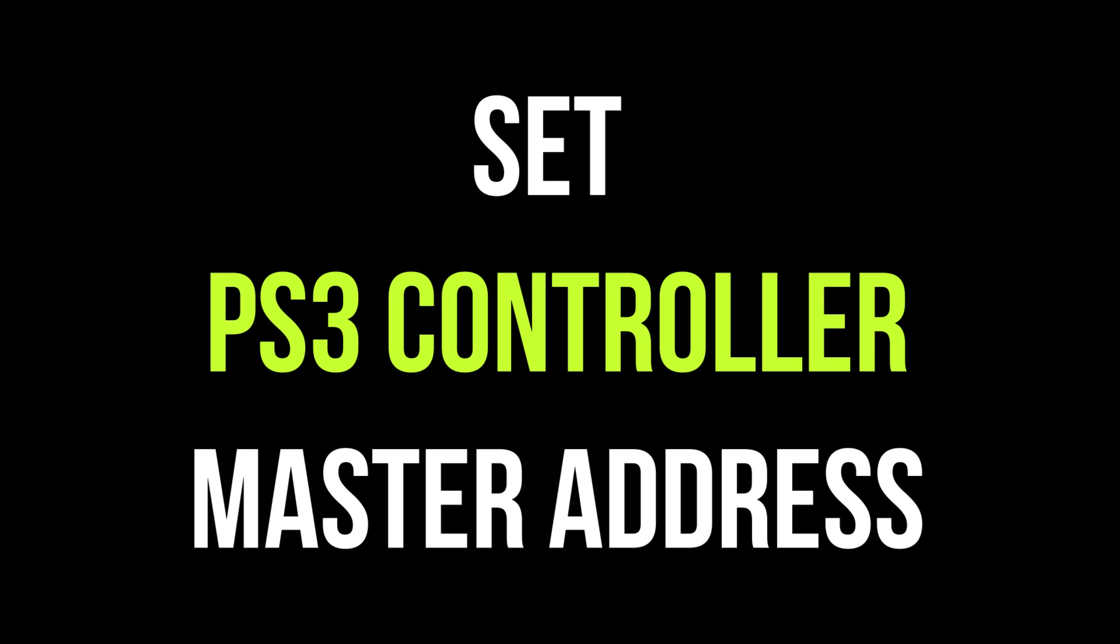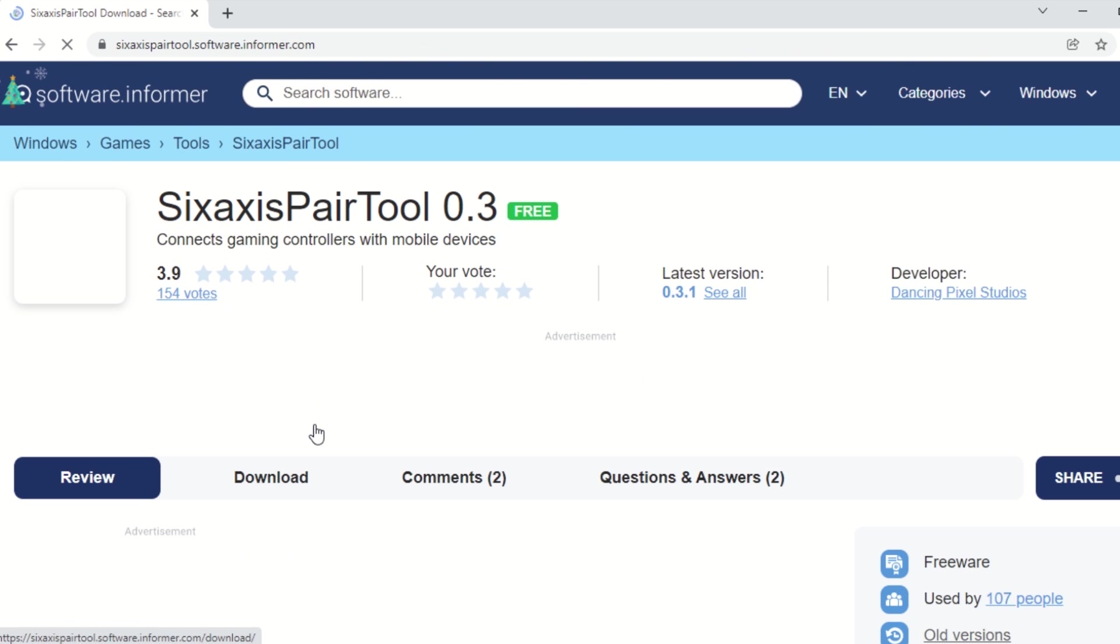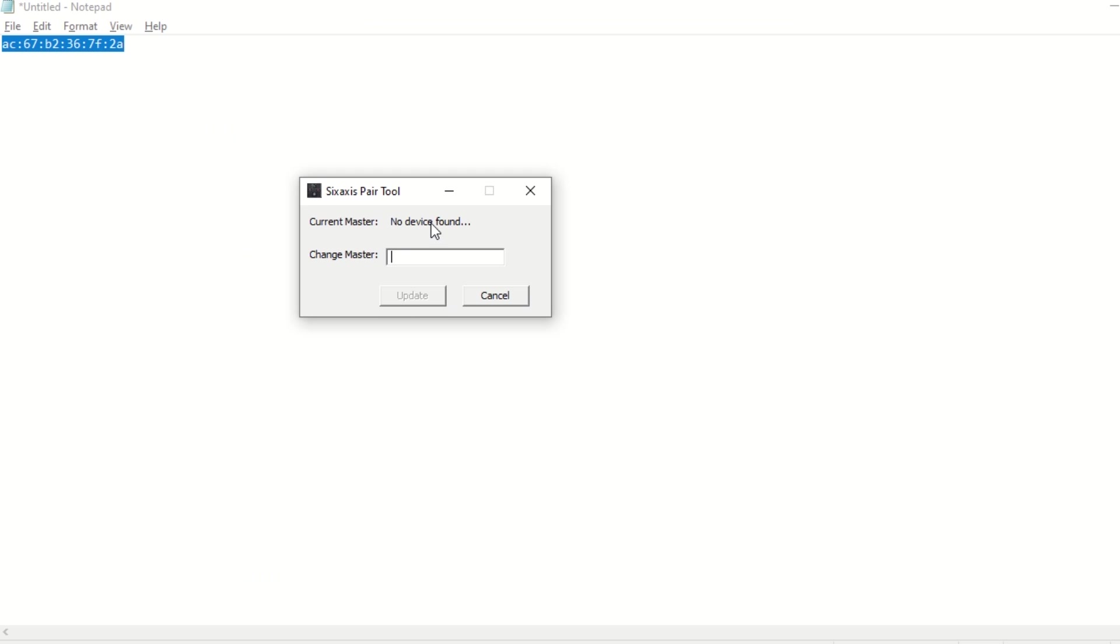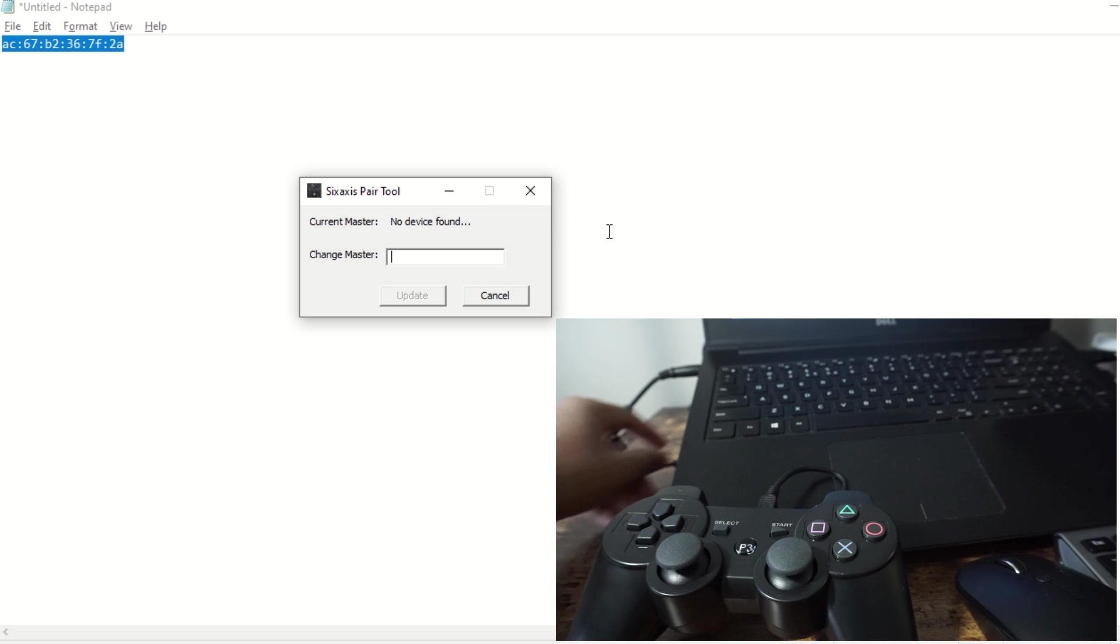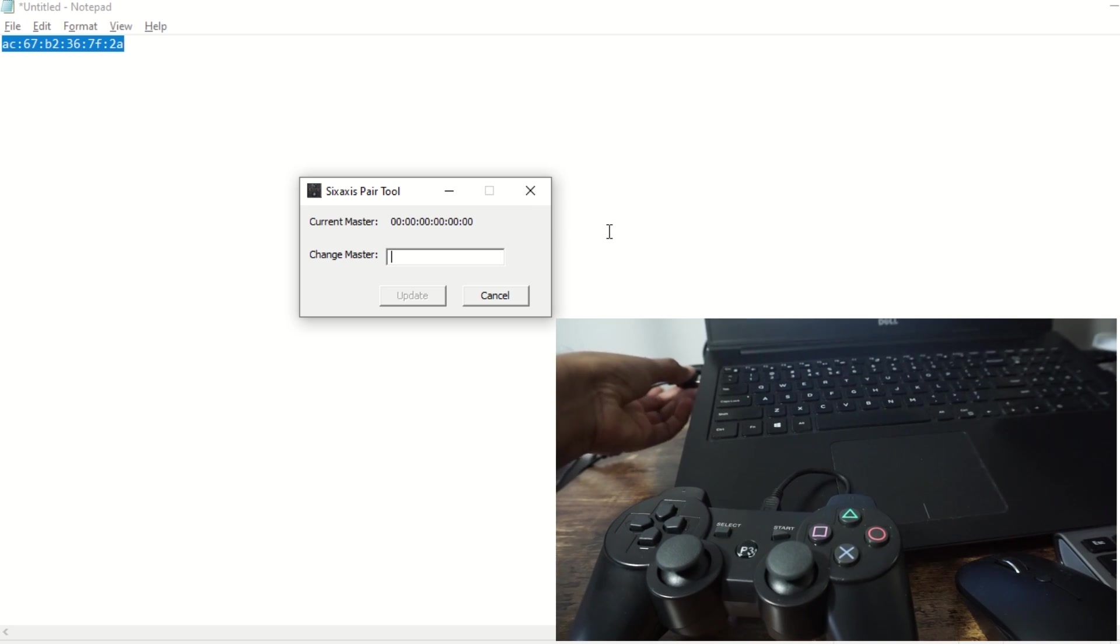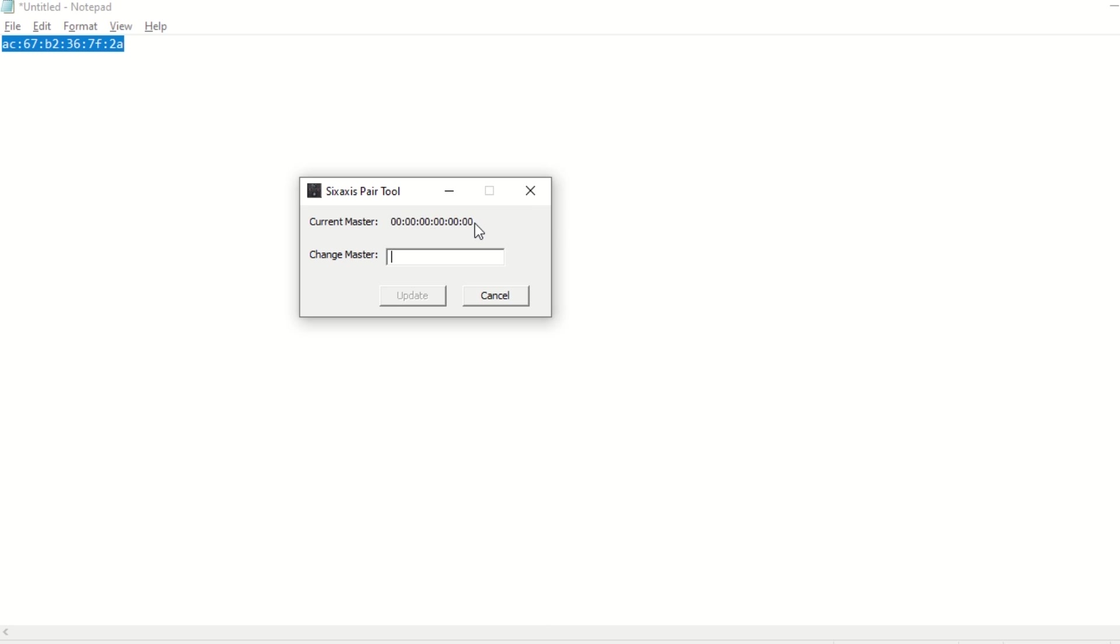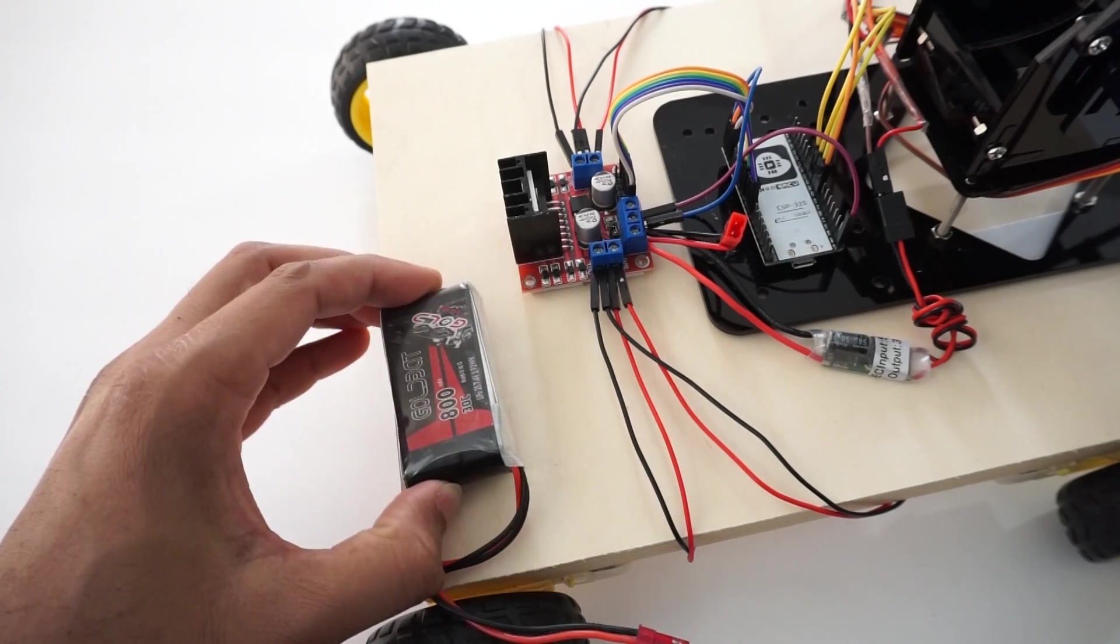Now we need to set this MAC address inside the PS3 controller. For that install the 6-axis pair tool. We can download this tool online. Once installed open this tool. It will say no device found. Now connect your PS3 controller with laptop using USB cable. You can see that the pair tool shows device connected. It will also display the current master address stored if any. Now input the MAC address of our ESP32 board which we found in previous step. Now click update. That's it. Our PS3 controller is set up to connect to ESP32 board.